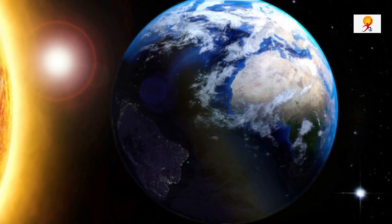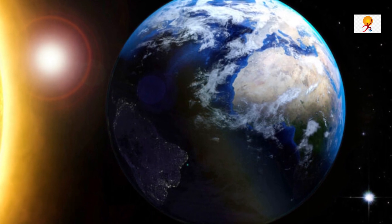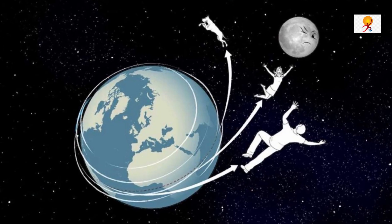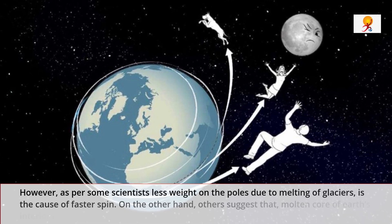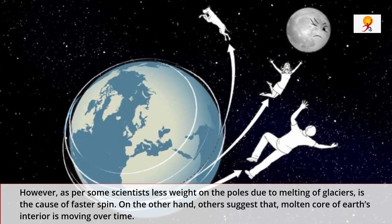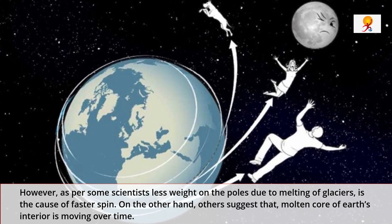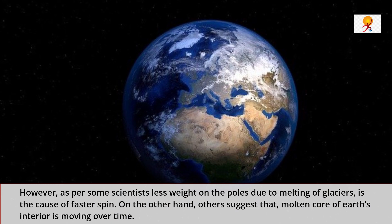Now we will understand what are the causes of the faster rotation of Earth. The answer to why the planet is rotating at a faster speed is not yet known. However, as per some scientists, less weight on the poles due to melting of glaciers is the cause of the faster spin.